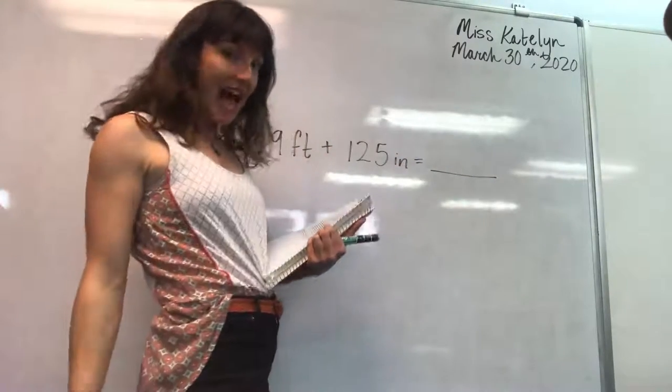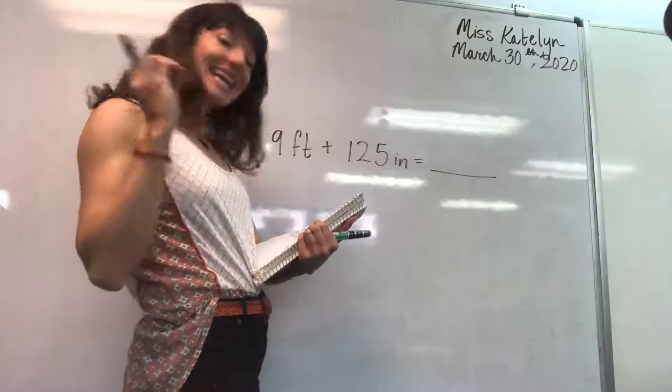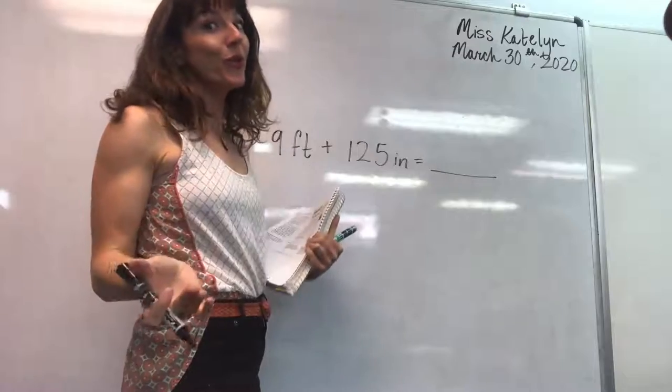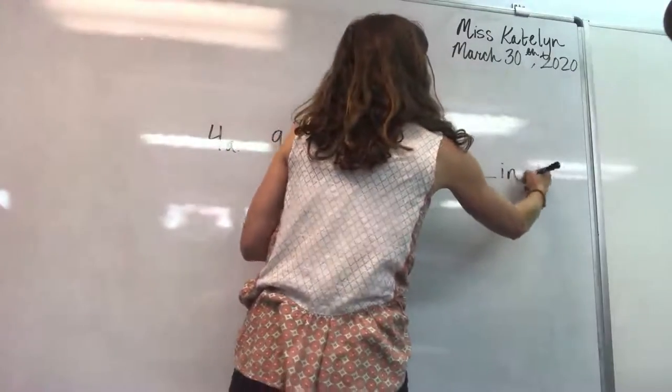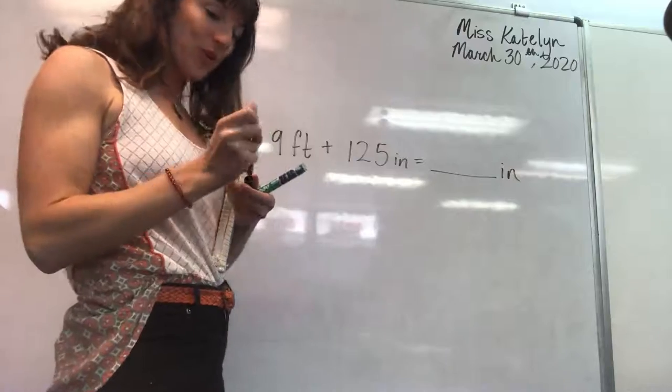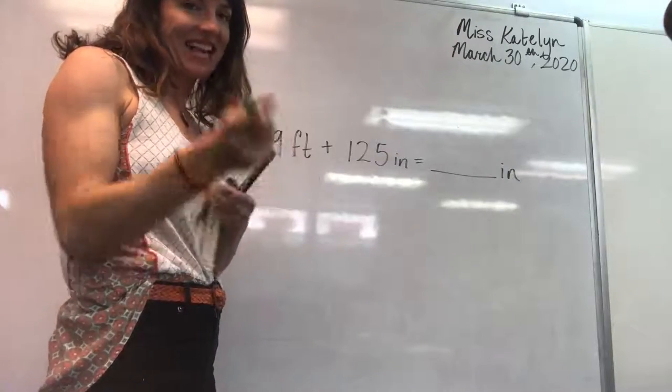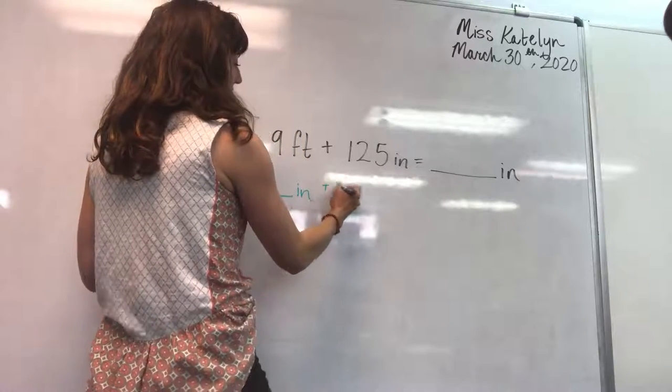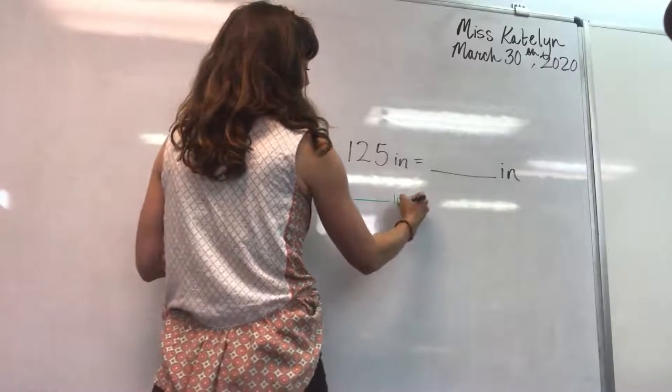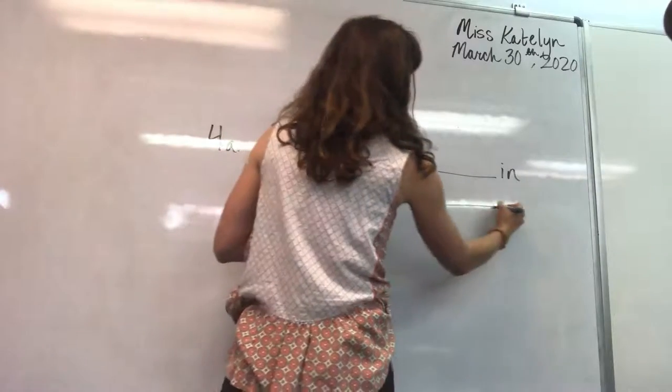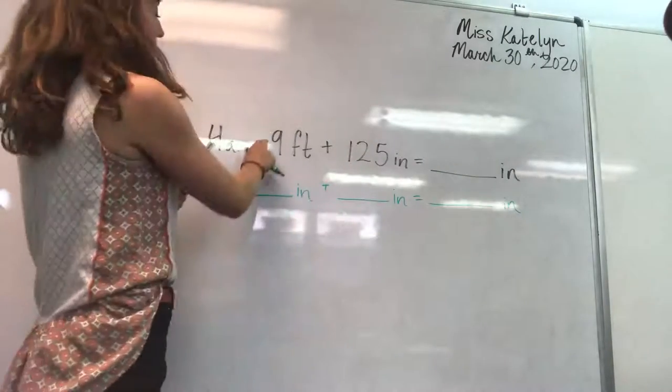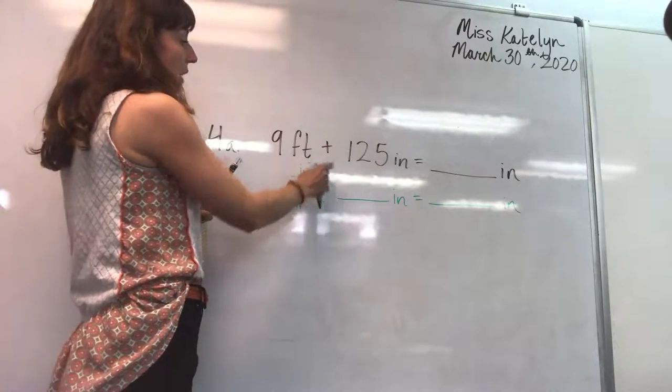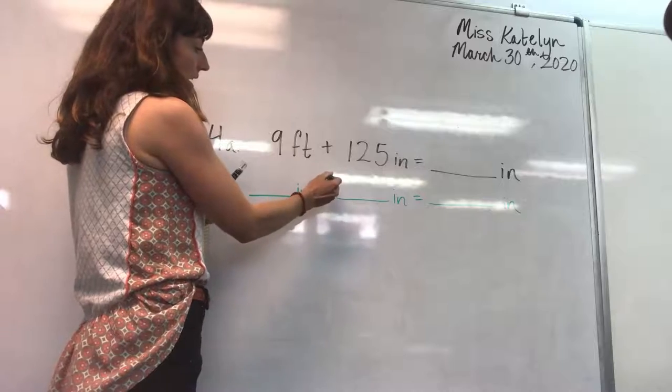Here we go. Nine feet plus 125 inches equals. And the final question asks, how many inches of wood did he order? So what are you looking for? You're looking for inches. And when you know what you're looking for, you want to change everything into that. Blank inches plus blank inches equals blank inches. Making sure our numbers and our blanks line up. Our forms of measurement line up. Our mathematical symbols line up.